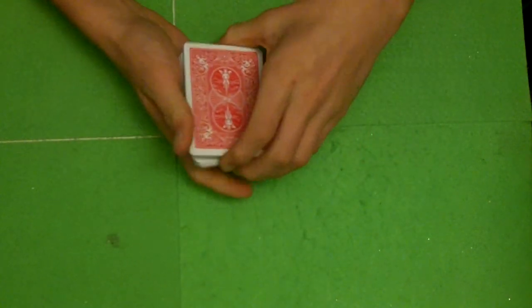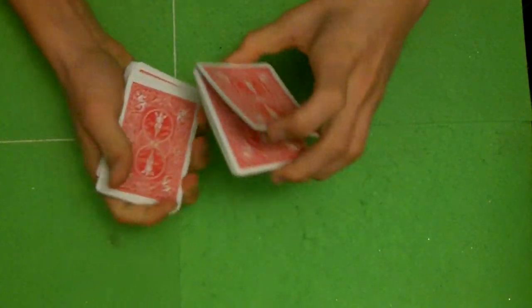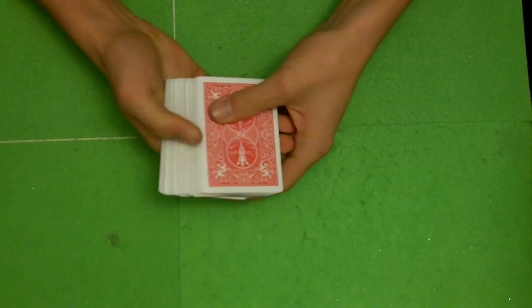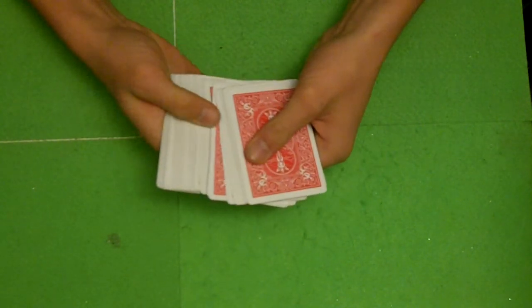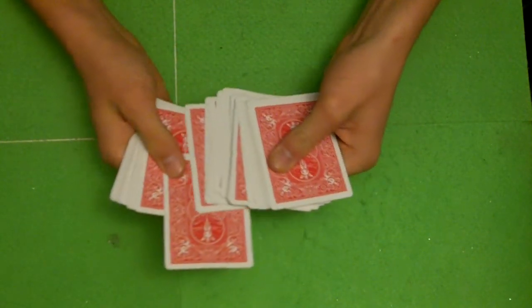So you can just cut the cards, you can tell the spectator to cut the cards, it doesn't matter. Now it's a free choice and they want this card.